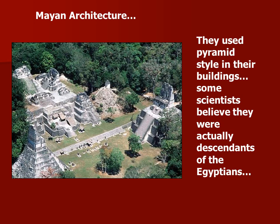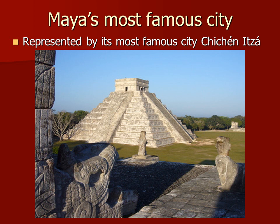The Mayans used pyramid-style buildings. They're not exactly like the Egyptian ones — they don't have that perfect peak with a perfect triangle — but they do use pyramids. Some scientists believe these people may be descendants of the Egyptians, though nothing in this unit is absolutely positively true; it's all educated guesses. Their most famous city is Chichen Itza. A friend of mine visited and took pictures for me, and you can see it does look Egyptian-ish.